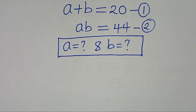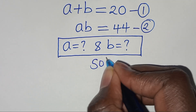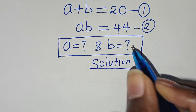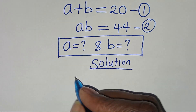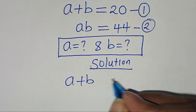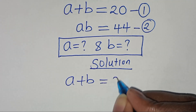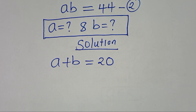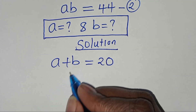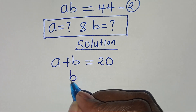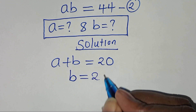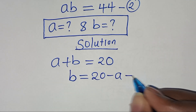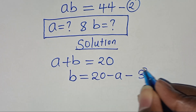Let's provide a solution here. From equation 1, which is A plus B equals 20, let's make B the subject of the formula, so that we have B is equal to 20 minus A. Let's call this equation 3.